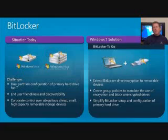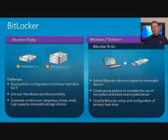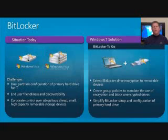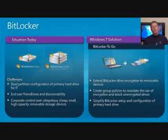BitLocker was introduced in the Windows Vista timeframe to help protect the operating system volume of a machine. In Service Pack 1, we added support for fixed data volumes as well. But there were challenges for IT organizations around the dual partition configuration needed. Many organizations deployed BitLocker with a single volume, and over time, as the OS ran, lock files were placed across the entire span of that disk volume, making it really hard to shrink partitions and create the dual partition setup they needed.